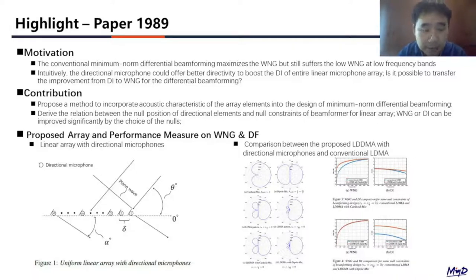As you can see, Figure 1 shows a uniform linear array with directional microphones. On the right hand side, if the null position of directional elements is the same as the null constraints of the differential beamformer, then the WNG will be improved.